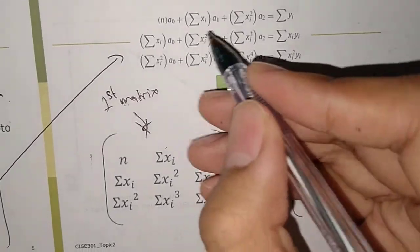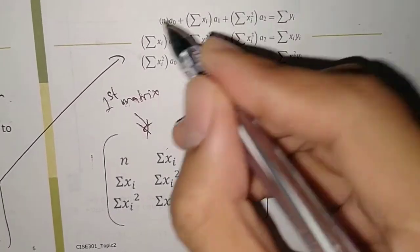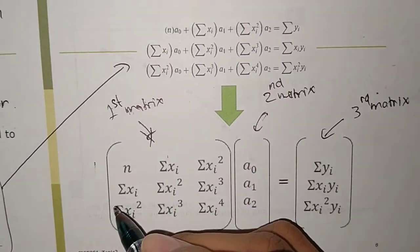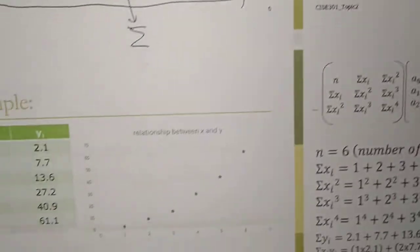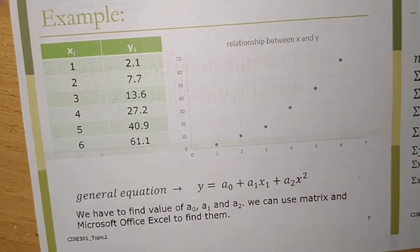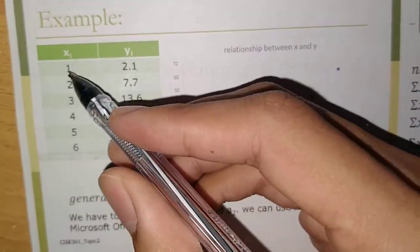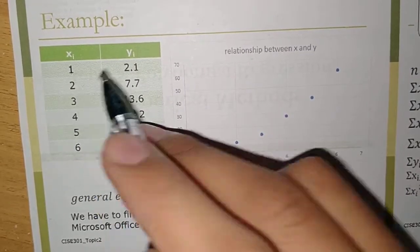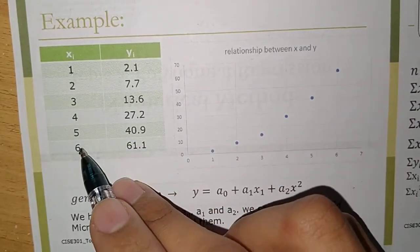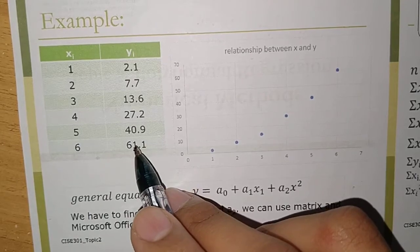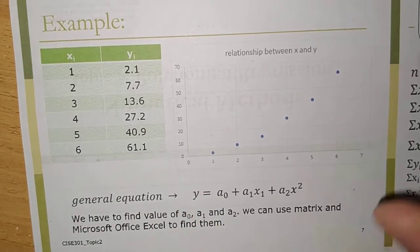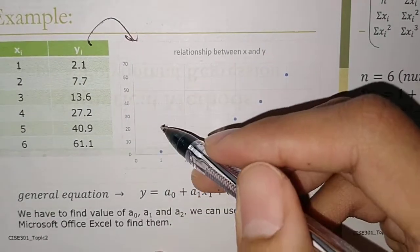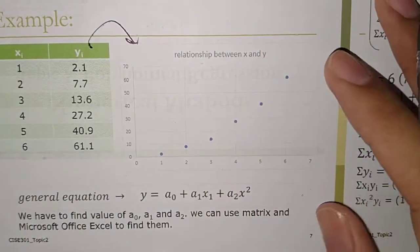That's how we transform this form into the matrix form. Now we are going to make an example. Assume that we have six data points: (1, 2.1), (2, 7.7), and continuing through (6, 61.1).